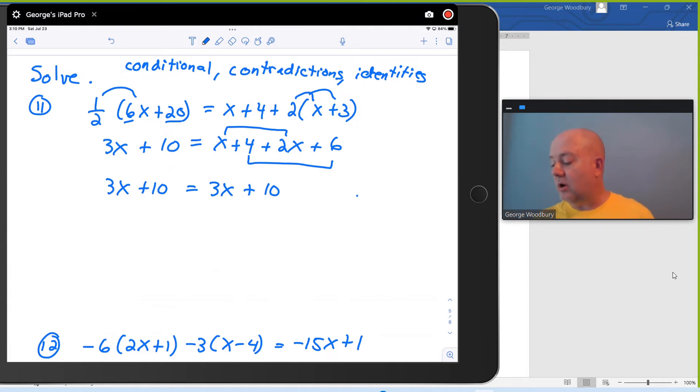This kind of an equation is called an identity because any value we would substitute in for x, the left side and the right side are identical, and it's going to be a solution. Now if you didn't catch this and you're kind of on autopilot, the next step in solving this would be to get all the variables to one side.